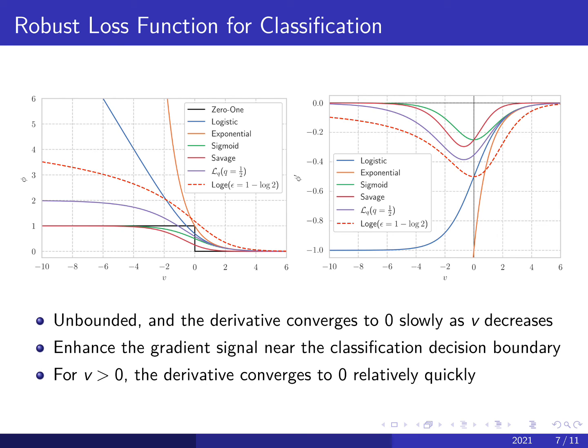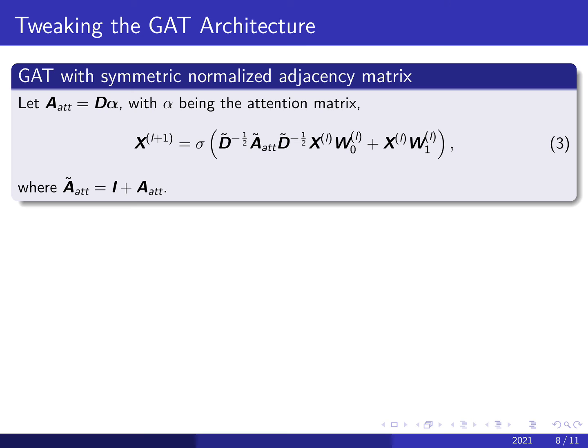Third, for correctly classified samples, that is the positive sign, the derivative converges to zero relatively quickly as with other loss functions. However, in this regime, the gradient signal is less critical.